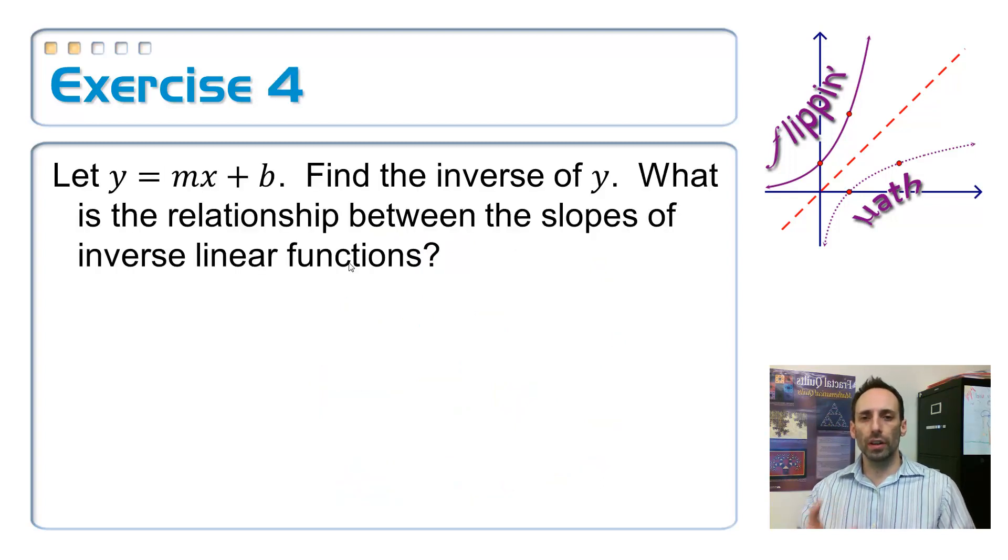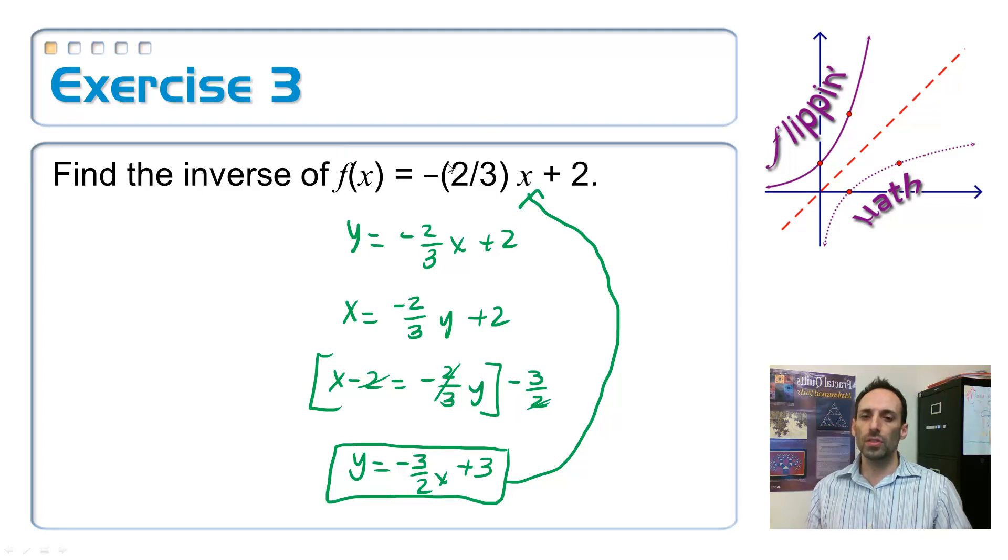So let's do it just kind of like on a generic one for a linear equation. y equals mx plus b. Let's find the inverse of that and see what's the relationship between the slopes of those two equations. Let me just back up a second. Let's look at the slopes before. This slope was negative two-thirds, and I ended up with a slope of negative three-halves. Interesting. I wonder if that kind of thing is always going to happen.